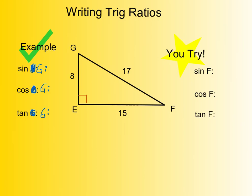So if I've got sine of G, just to get you in the habit of knowing which angle you're at, I'm going to have you draw a little person. If I'm at angle G, I need to be looking as if I'm standing there. So the side EF, which is 15, would be my side opposite, and 8 would be my side adjacent, and 17 is my hypotenuse.